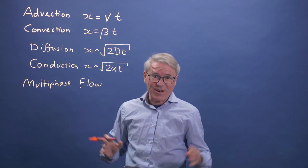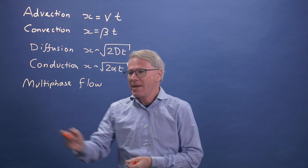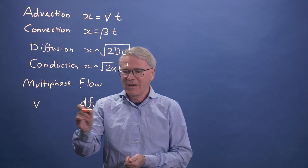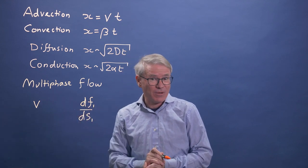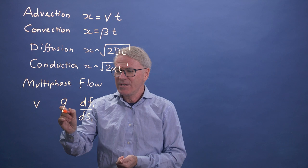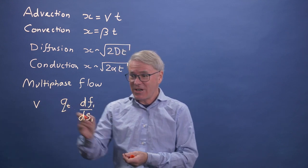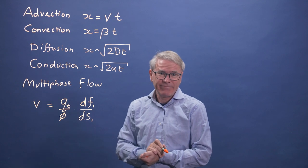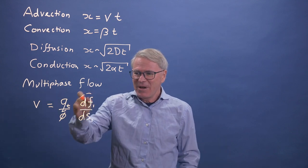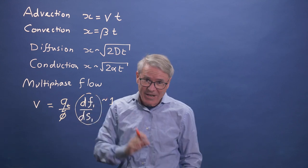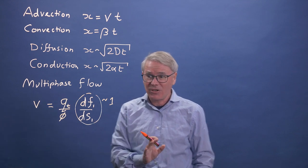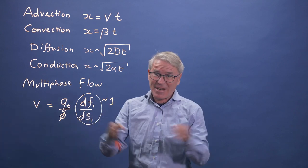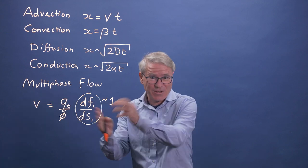In the previous videos, we constructed analytic solutions and looked at a velocity. The velocity with which something moved was either our shock speed or a differential of our fractional flow — but that was a dimensionless velocity. In dimensional terms, it's the total velocity — the total volume injected per unit area per unit time — divided by porosity. The gradients are of order one: it's a dimensionless number, the gradient of a function where saturation goes between zero and one and F goes between zero and one.